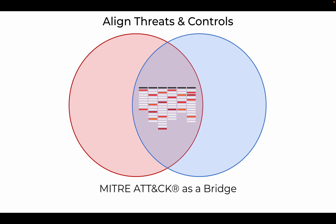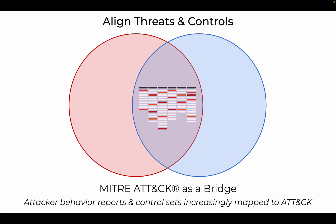MITRE ATT&CK mapping is core to Control Validation Compass, serving as the critical bridge between the internal controls and external threat environments. From the controls side, Control Validation Compass offers a unique collection of mappings and direct links to resources across nearly 30 publicly accessible repositories.